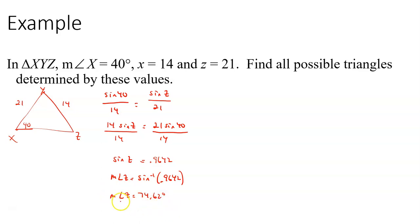And I got 74.62. So here we had a positive sine value, which means that it could be in quadrant one, or it could be in quadrant two. So clearly 74.62 is in quadrant number one. What's the other value in quadrant number two? So option number two is to do 180 minus 74.62 and see if we get an angle measure that makes sense. So 180 minus 74.62 gives me 105.38.